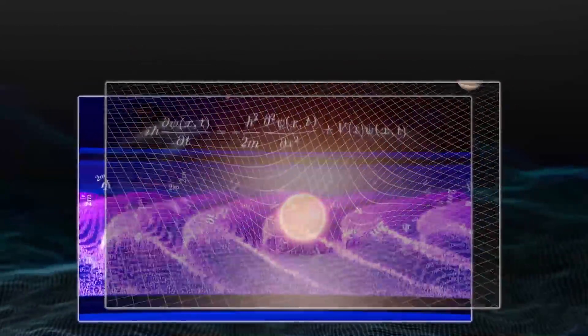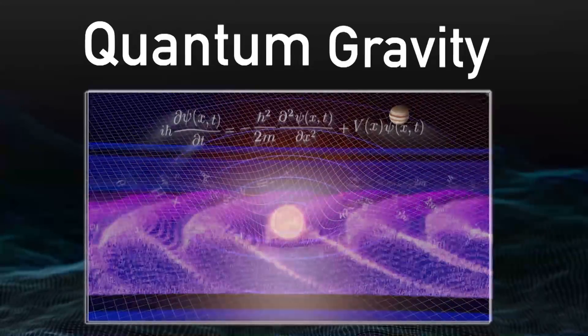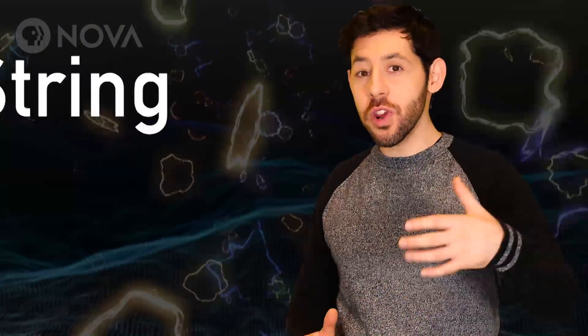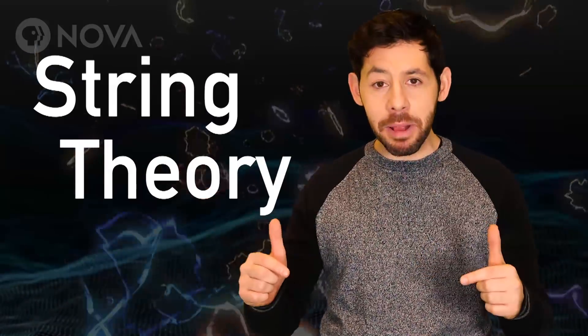Combining these would give us what's called a theory of quantum gravity. So what would the most popular theory of quantum gravity, called string theory, predict is in a black hole?